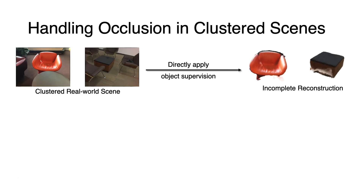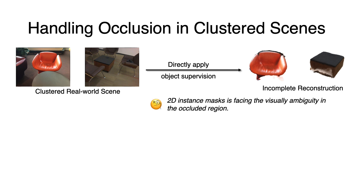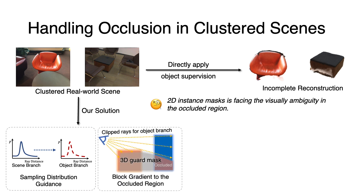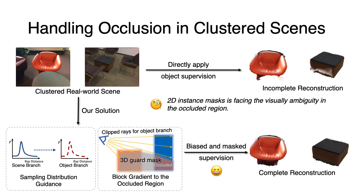In real-world scene scans, target objects are often occluded by other foregrounds, which yields incomplete instance masks. If we directly train the network with these masks, it may overkill part of the object due to visual ambiguity in the occluded region. To tackle this problem, we first use the scene branch to guide the biased sampling of the object branch, so as to reduce point sampling at the occluded region. Then we construct a 3D guard mask based on the rendered scene depth, which identifies the occluded region for the object branch and blocks the gradient flow to the occluded region. Thanks to these strategies, we can learn to reconstruct the complete object even in a cluttered scene. Please refer to the paper for more details.